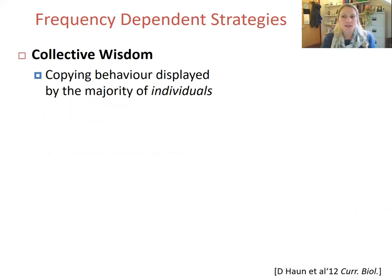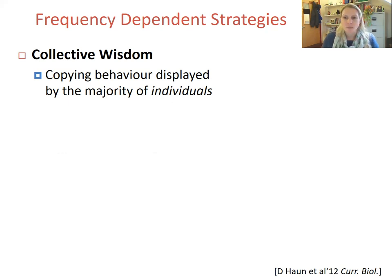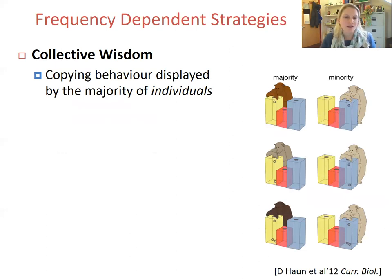The issue of conformity is a thorny one, and it doesn't stop with the two different types I just outlined. There's also a confusion regarding what majority actually means. The adaptive benefit of conformity — enabling the observer to use the collective wisdom of those surrounding them rather than learning for themselves — dictates that observers should copy the behaviour displayed by the majority of individuals, not just the behaviour they see demonstrated most often. A study by Daniel Hown et al. nicely demonstrates this point.